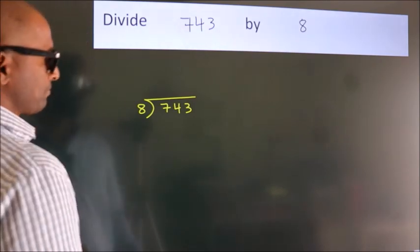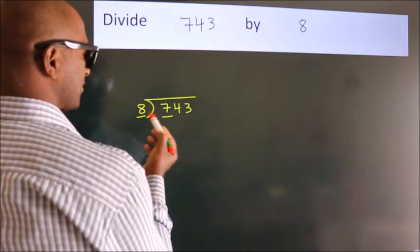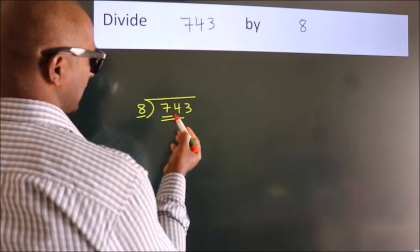Next, here we have 7. Here 8. 7 smaller than 8. So we should take 2 numbers: 74.